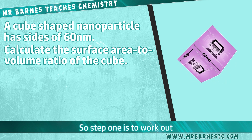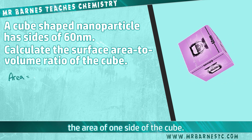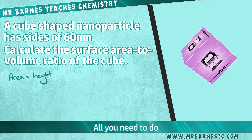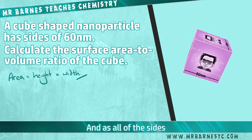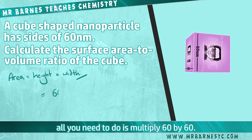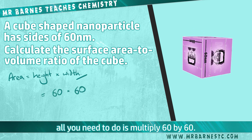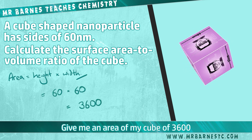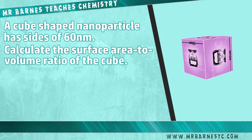Step one is to work out the area of one side of the cube. To work this out, all you need to do is multiply the length by the width, and as all of the sides are the same length, all you need to do is multiply 60 by 60, giving an area of 3600 nanometres squared.